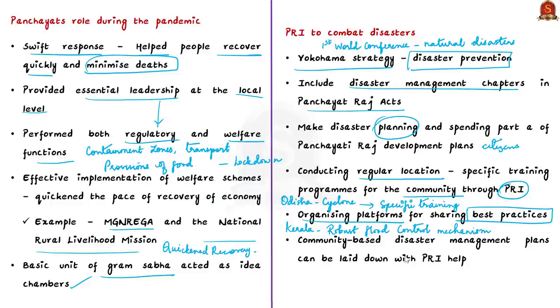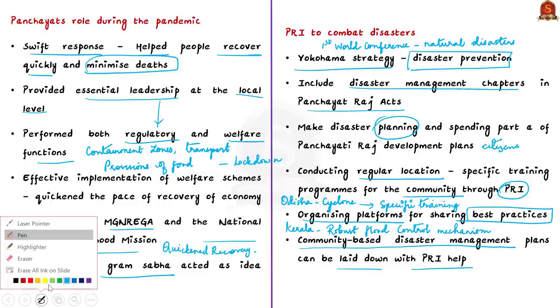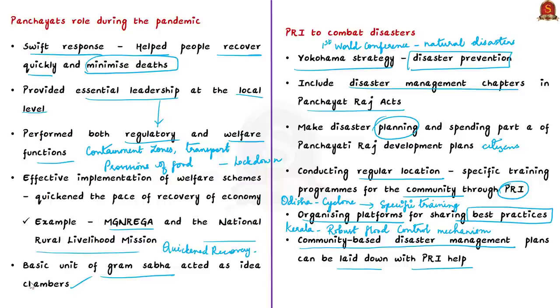Another important thing is to organize platforms for sharing best practices. For example, if some Kerala village has a robust mechanism to deal with flooding, this can be shared and replicated elsewhere in Bihar as well. Since the community is usually the first responder in case of a disaster, community-based disaster management plans can be laid down with the help of Panchayati Raj institutions.